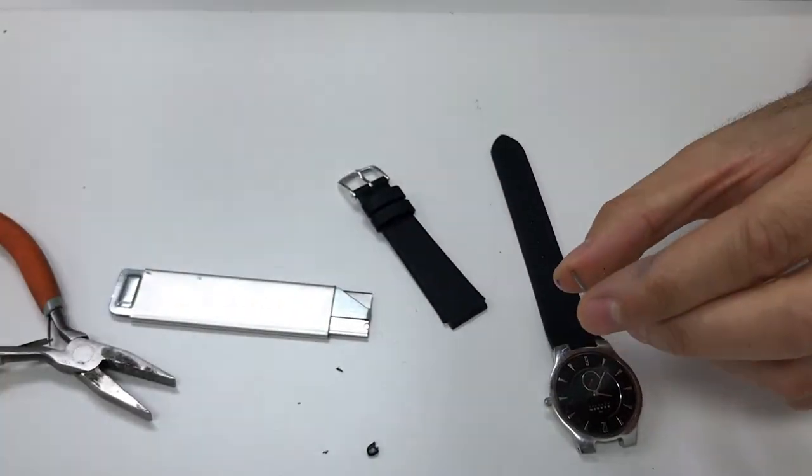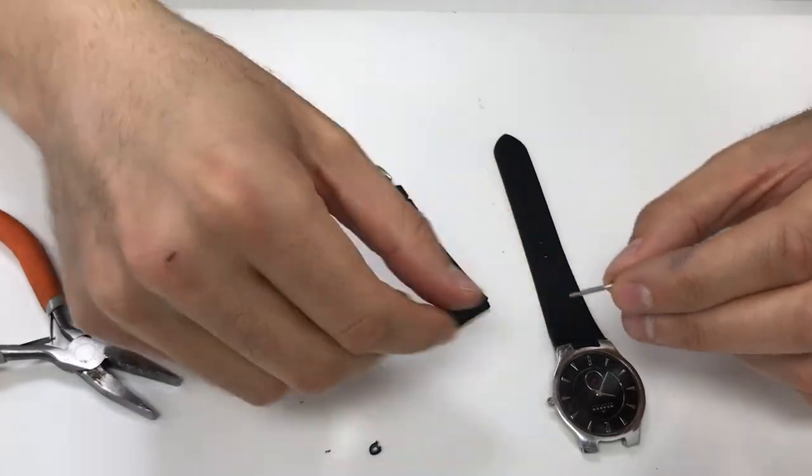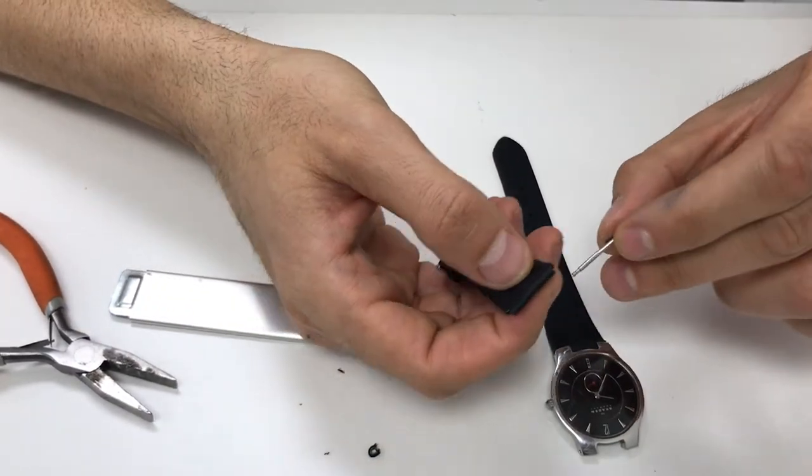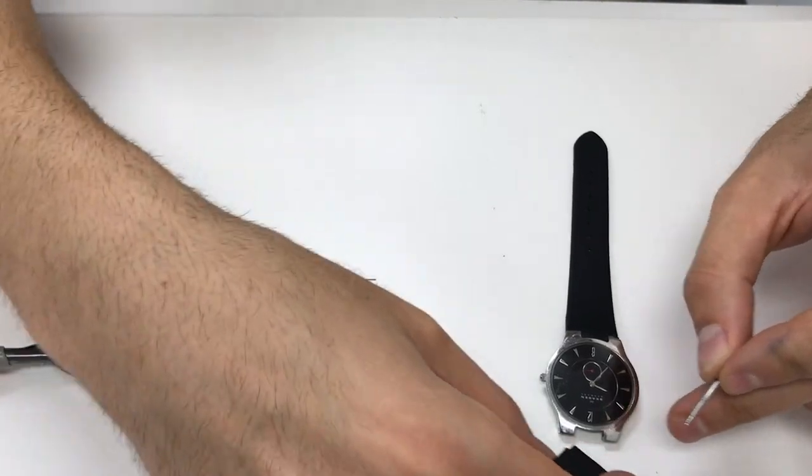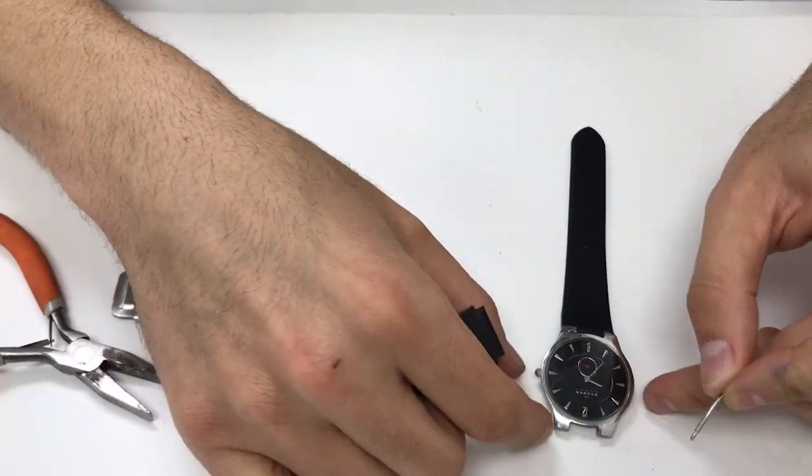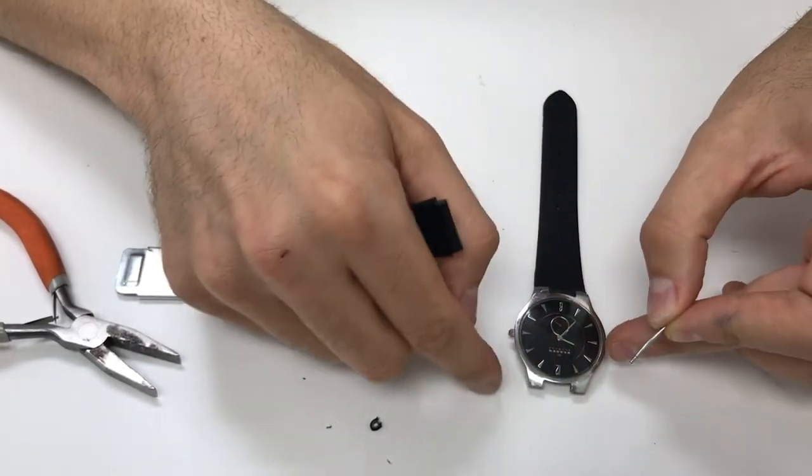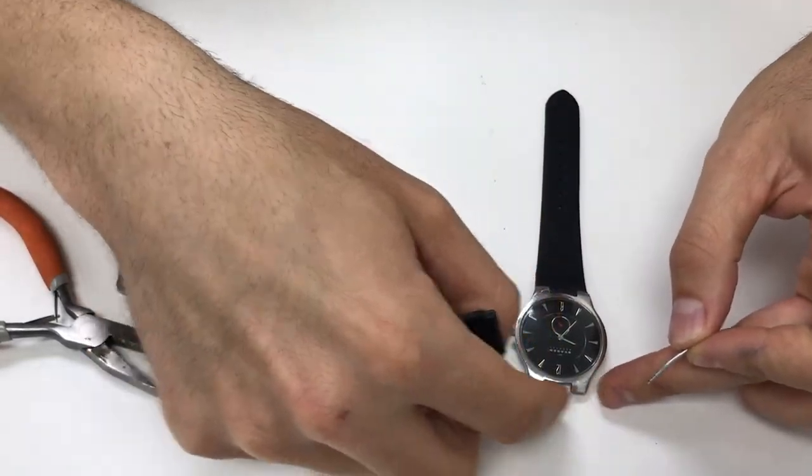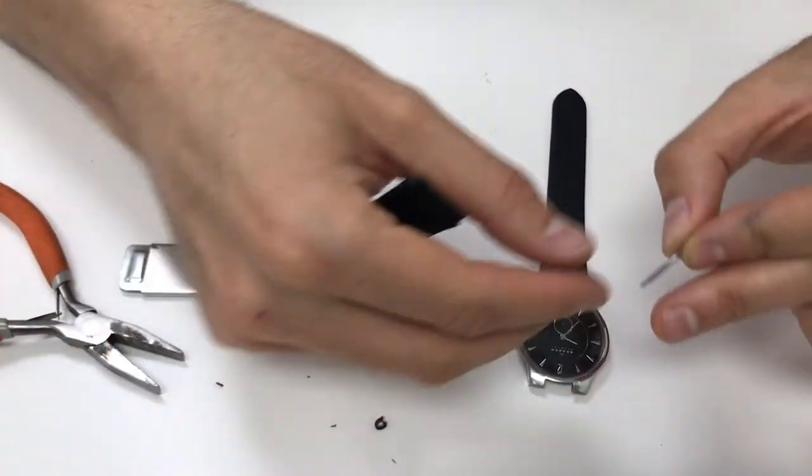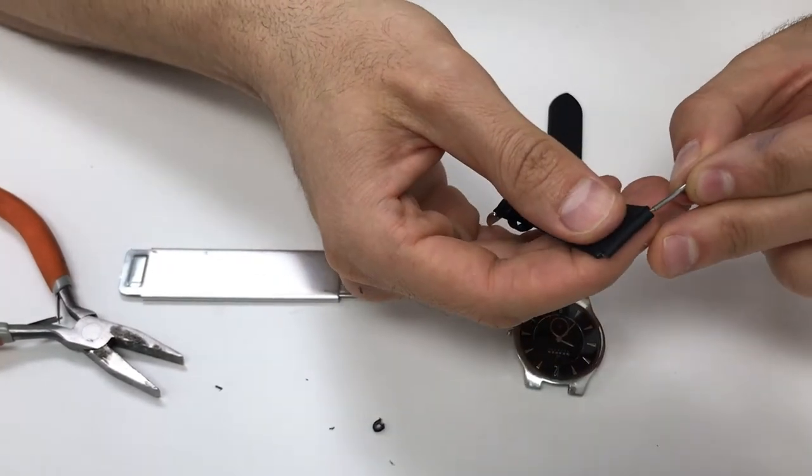Now the reason why I'm curving the spring bar is because when you put the spring bar in straight sometimes it's very hard for it to attach to the strap because of the way that this case is built. When you have it curved it's much easier to attach to both sides, it's just the way that the case is built.